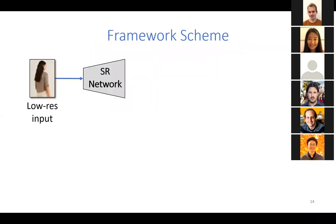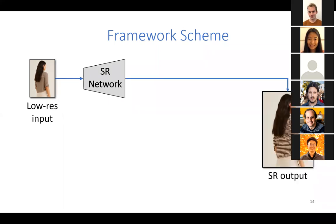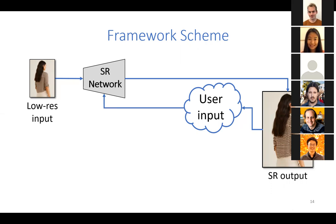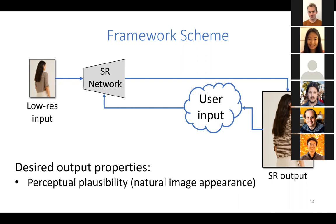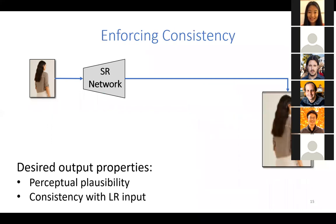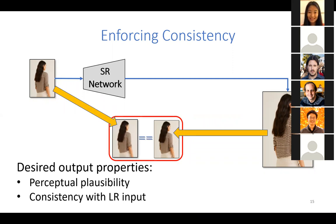Let's start with the framework. We have the low-resolution input, the super-resolution network, and the output. The first main modification we propose is to incorporate some kind of user input signal, where a user can look at the output and manipulate the signal to manipulate the output, interacting with the system to explore different solutions. We want all outputs to have two important properties: first, perceptual plausibility — outputs should look like natural images, achieved through GAN training. Second, all outputs must be consistent with the low-resolution input, meaning when we downsample the output, it precisely matches the input.